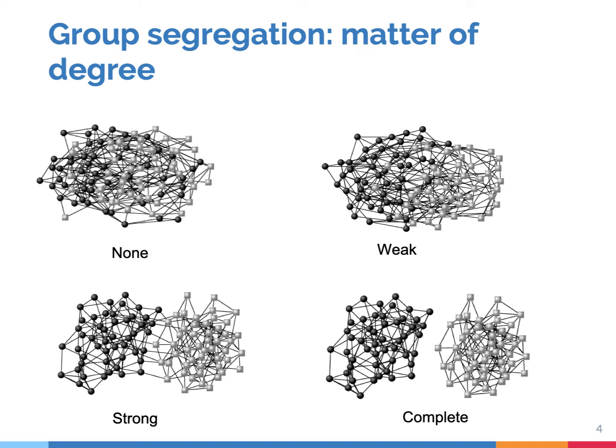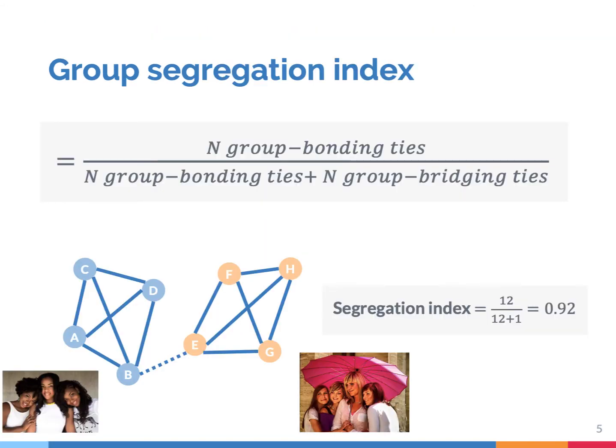Group segregation is not a matter of yes or no, existing or absent. Instead, it's a matter of degree — group segregation ranges from nonexisting to complete. To get a better picture of how strongly groups are segregated, you can use the group segregation index. It simply divides the number of group bonding ties by the total number of ties. So the more this number goes up, the larger the segregation. In this case it's 0.92, which means it is close to complete segregation of the friendship network.